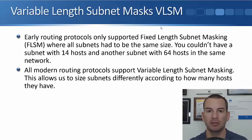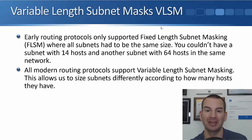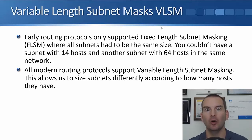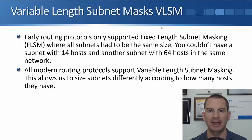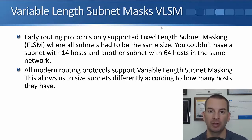The slide you see here is the same one from the end of the last lecture, where we explained that back in the day with early routing protocols, whenever you did subnetting each of the subnets had to be exactly the same size. So if you had one subnet that was a /28, they all had to be /28. You couldn't mix and match /27, /28, /29 within the same larger network, but that ended up wasting a lot of addresses. With later routing protocols they added support for variable length subnet masks, and now we can mix and match the size of our subnets within a greater network.